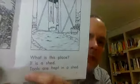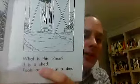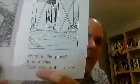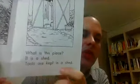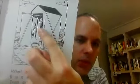What is this place? It is a shed. Shed. Tools are kept in a shed. So there's the tools up there, the shovel and the rake. You can also call it a tool shed because it has tools.